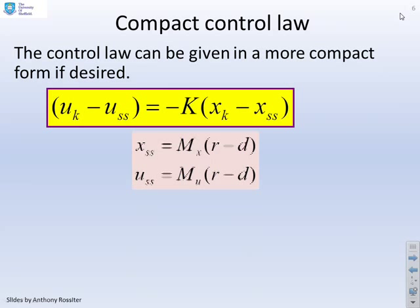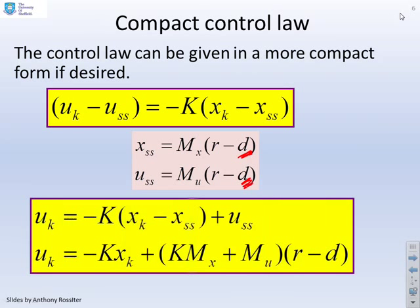So what have we got? There's our controller, there's our estimates for the steady state values, and those use this D, which is the disturbance estimate.